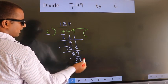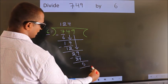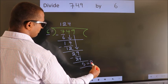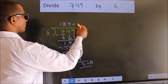No more numbers to bring it down. So we stop here. This is our remainder. This is our quotient.